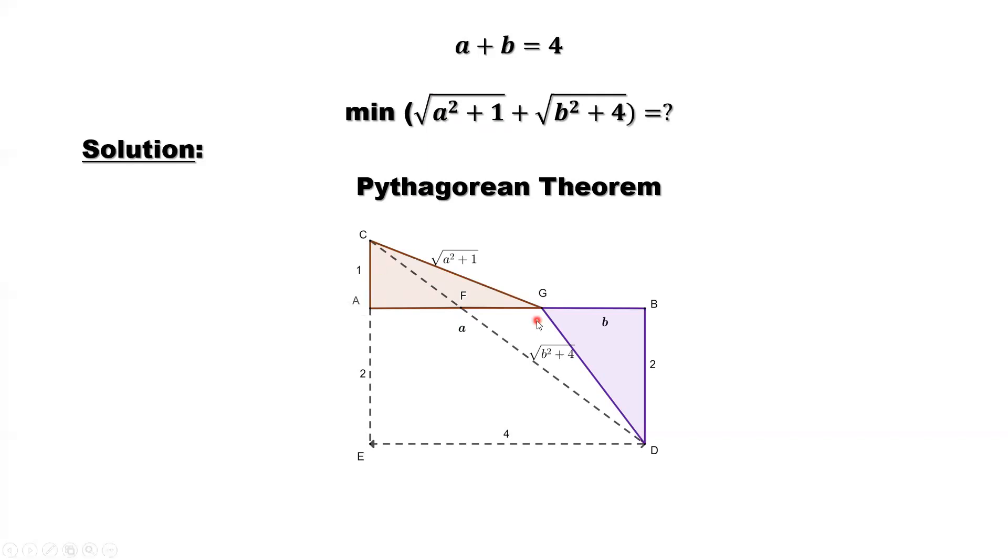Similarly, we consider the second right triangle. This side is b. Look at the inside of this second part. That's b squared plus 4. 4 is 2 squared. So if this side is 2,